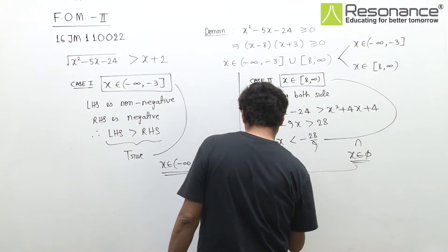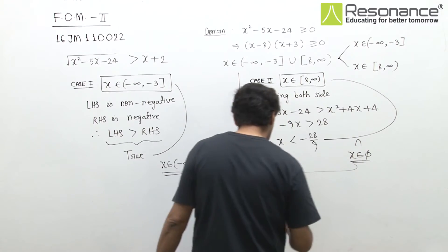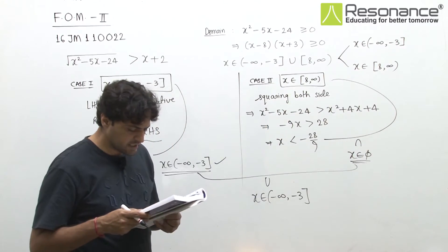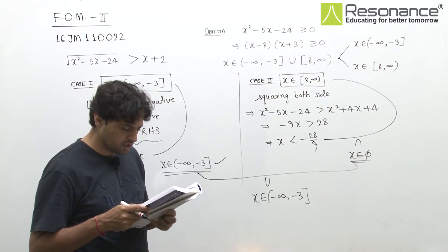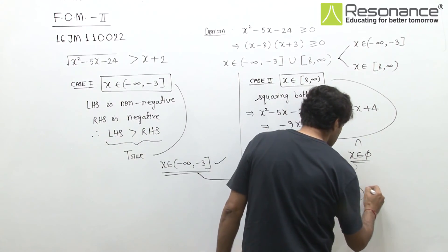x belongs to (-∞, -3] is the set of all real values of x satisfying the given inequality, which is given in option C. That means option C is correct.